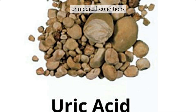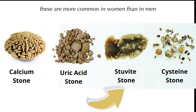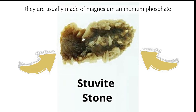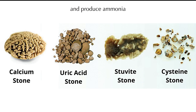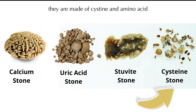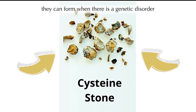Struvite stones are more common in women than in men. They are usually made of magnesium ammonium phosphate. They can form when there is a urinary tract infection that causes the urine to become alkaline and produce ammonia. Cysteine stones are rare and usually run in families. They are made of cysteine, an amino acid that is part of the protein in the body. They can form when there is a genetic disorder that causes too much cysteine to leak into the urine.